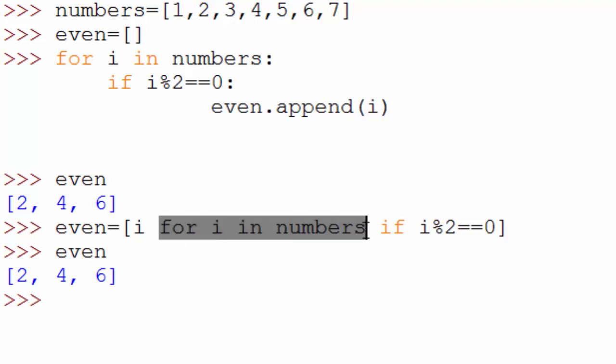Here you're writing your for loop, here is your condition and here is the output that you want to put in this resultant list. So you can see here the syntax is very compact so it can reduce number of lines in your code and it is much more readable and easy to understand.